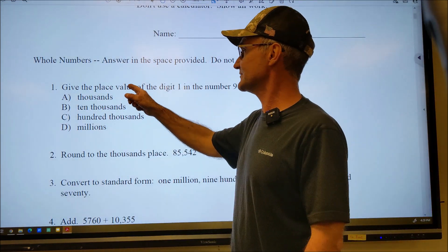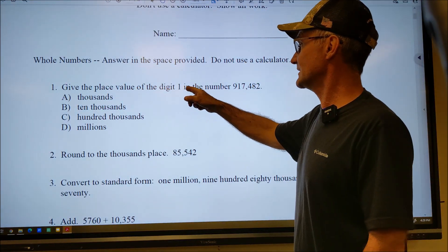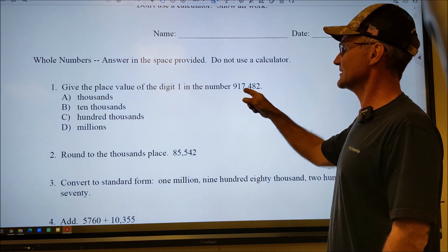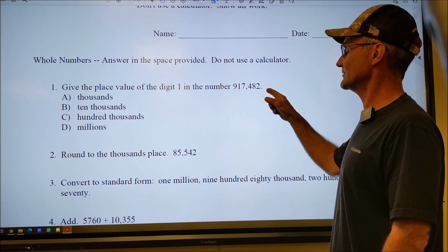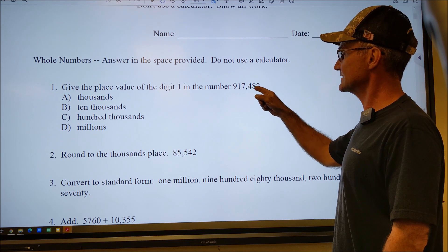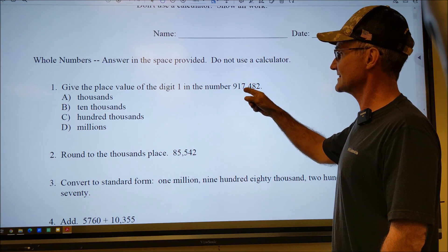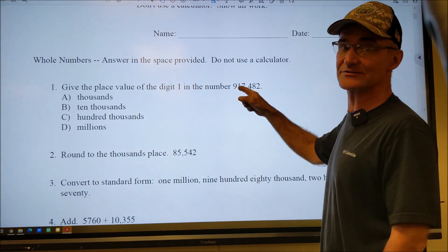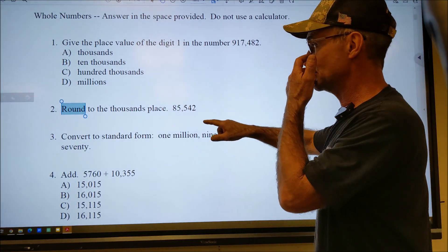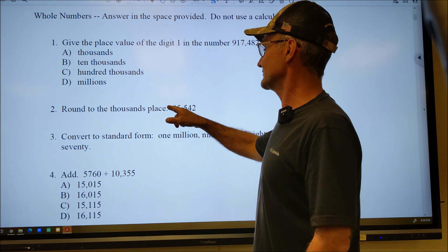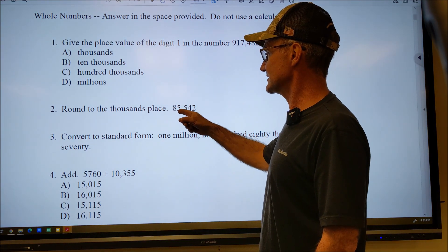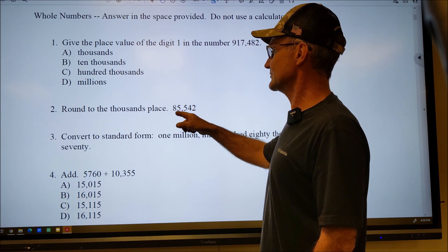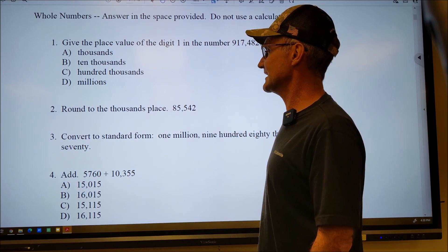Number one: give the place value of the digit 1 in this number. So this is 917,482 — ones, tens, hundreds, thousands, 10,000. So the 1 is in the 10,000 place. Number two: round the number to the thousands place. That's going to be this 5 right here. This is above 500, so you're going to round this to 86,000.